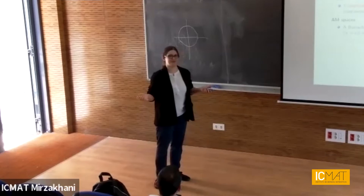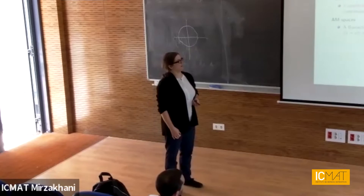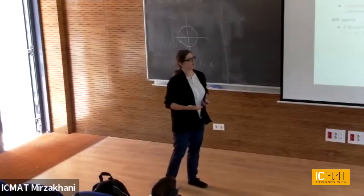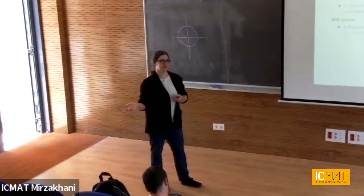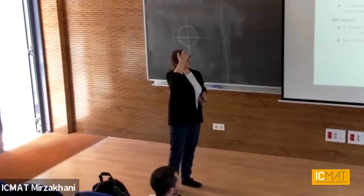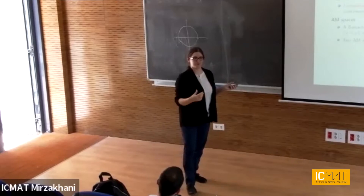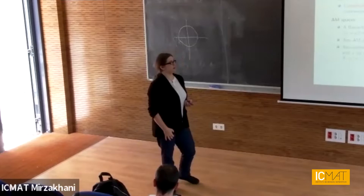What we did was we looked at the class of AM spaces, which are very much not order continuous unless you're dealing with C₀. A Banach lattice X is called an AM space if for any disjoint X and Y, the norm of X plus Y is the same as the max of the norms of X and Y. This is like a folklore result that any AM space is a sub-lattice of a C(K) space for some compact Hausdorff K.